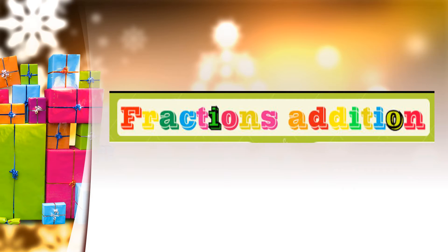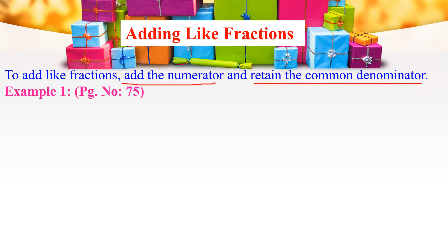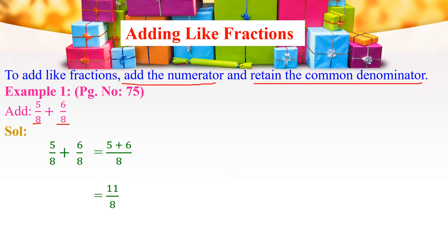Now let us move on to the main topic, which is Addition of Fractions. First, let us see adding like fractions. To add like fractions, add the numerators and retain the common denominator. We need to add only the numerators and the denominator remains the same. Example number 1, page number 75: Add 5 by 8 plus 6 by 8. Both fractions have the same denominator. So we add only the numerators: 5 by 8 plus 6 by 8 equals 5 plus 6 divided by 8, which gives 11 by 8.